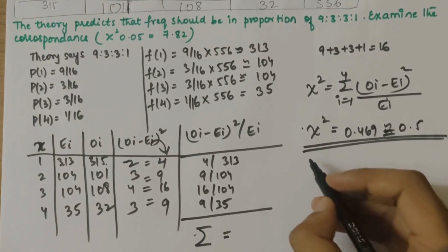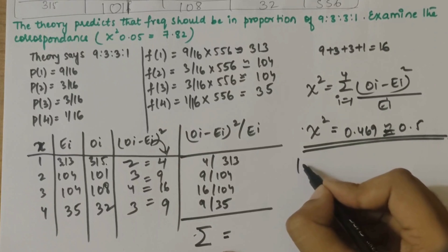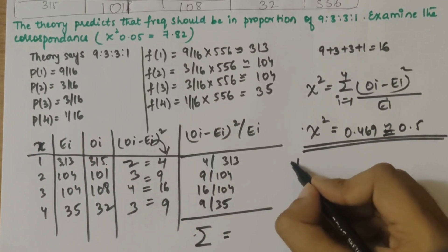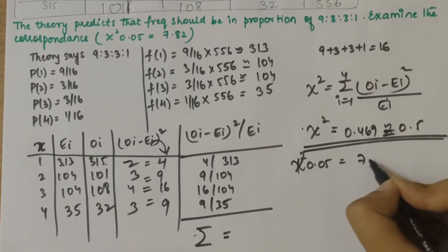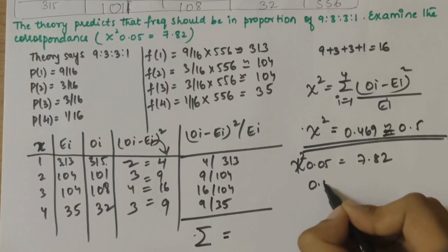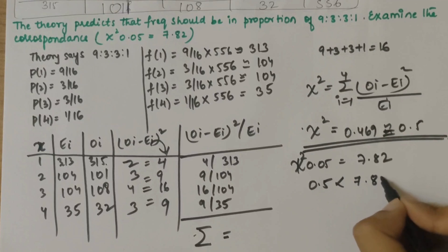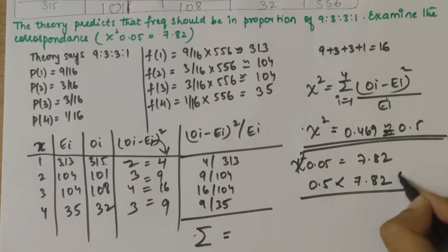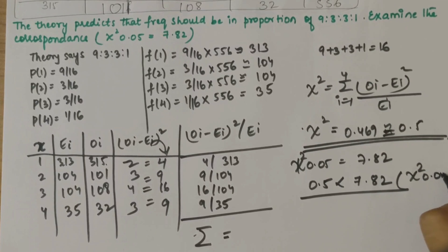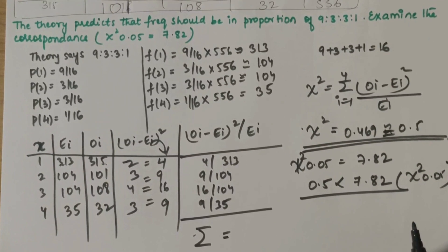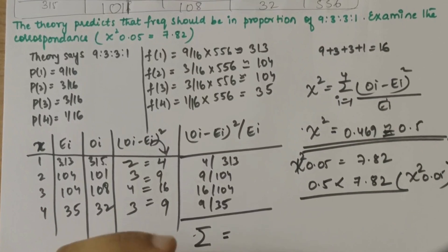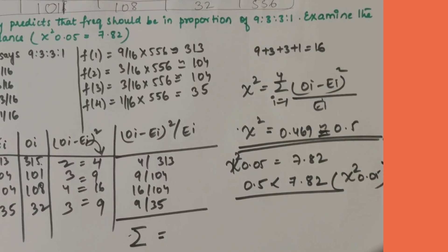So the chi-square value is 0.5. The critical value of chi-square at 0.05 significance level is 7.82. Since 0.5 is less than 7.82 at the five percent level of significance, we can say that the hypothesis is accepted — the theory is fitted to the experiment. I hope you understood how to solve this question. If you have any doubts, let me know in the comments and subscribe to my channel. Thank you.